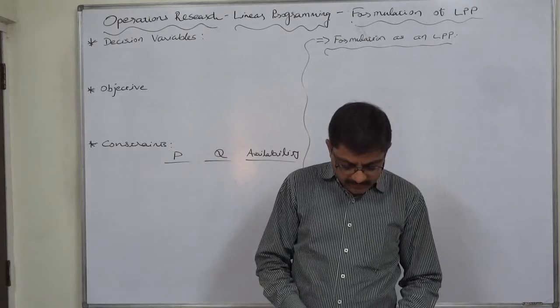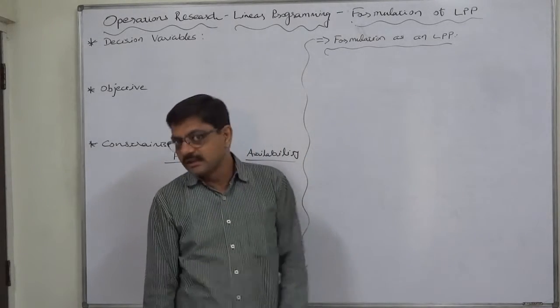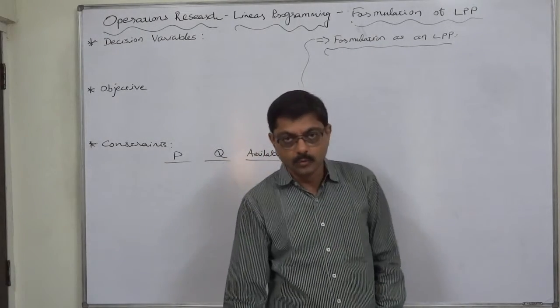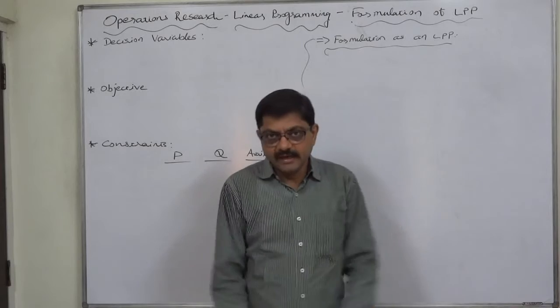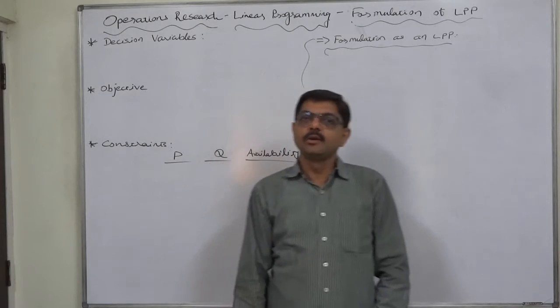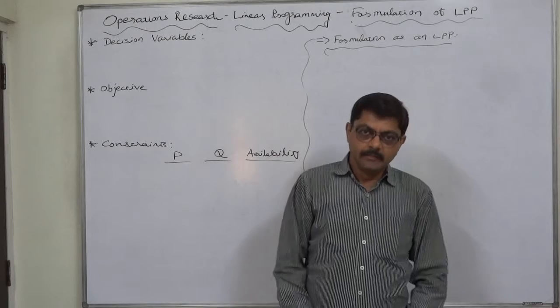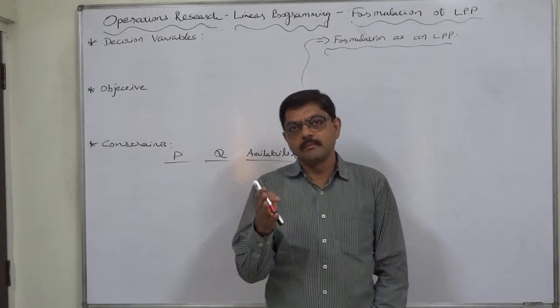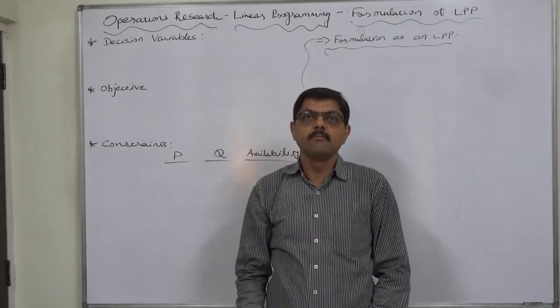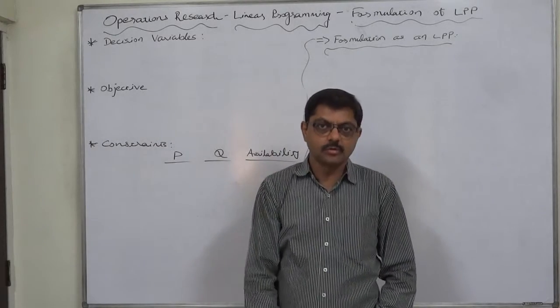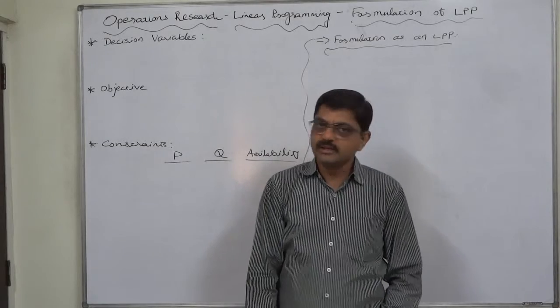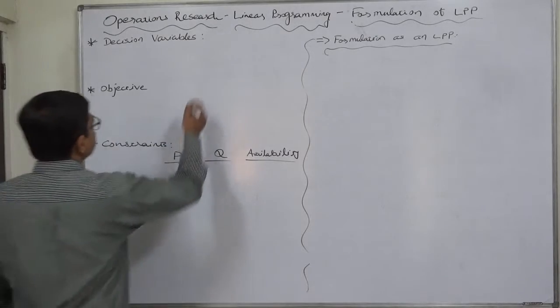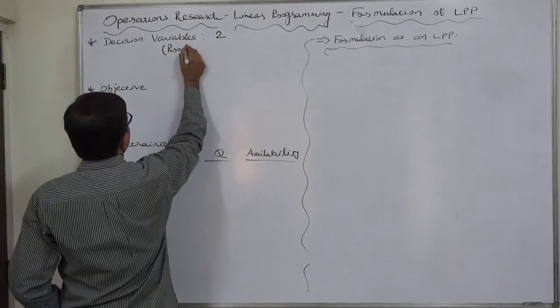Formulate this problem as an LP model to maximize profit. The profit rate is 40 and 30 rupees per unit of P and Q. So it is very clear that P and Q are decision variables, because achievement of our objective - total maximum profit - is dependent on the number of units to be manufactured and sold. That means there are two decision variables: product P and Q.